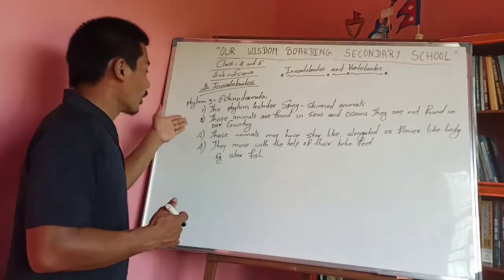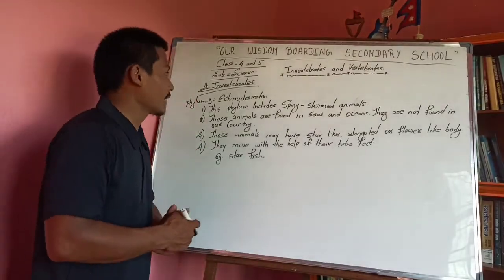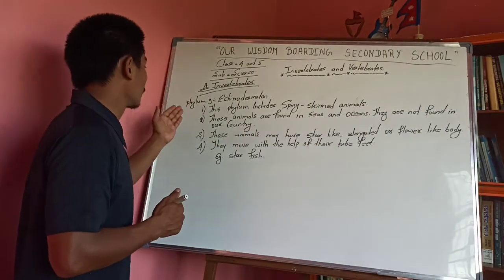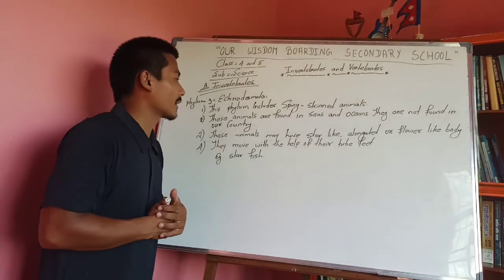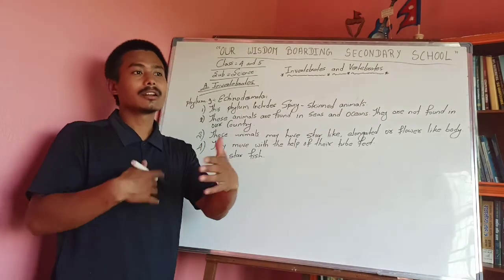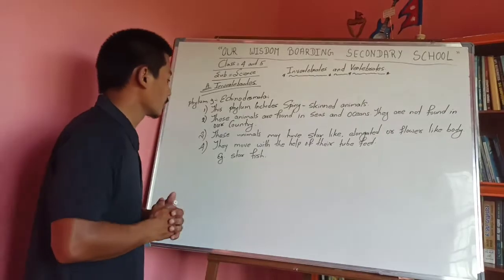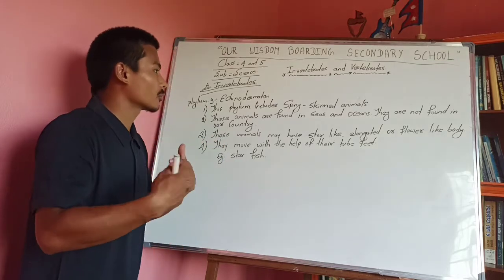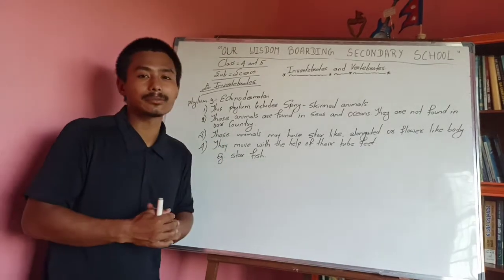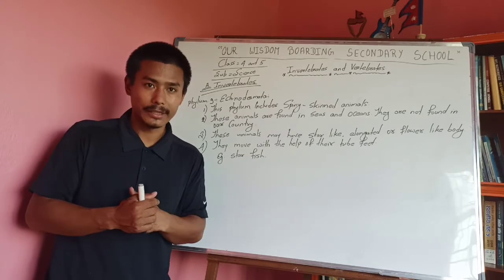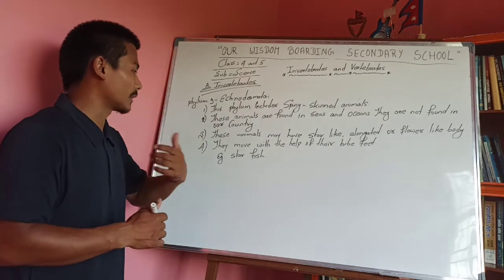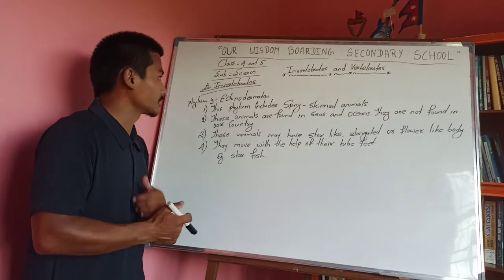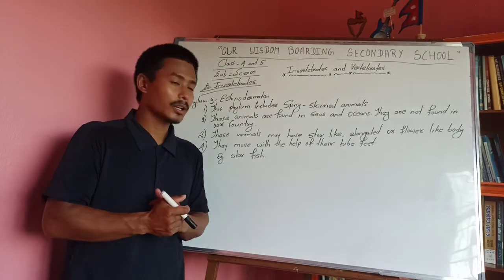We have now covered the invertebrates and vertebrates. We have described the invertebrate phyla from Phylum 1 to Phylum 9. In the next class, we will define the vertebrate classes. Thank you.